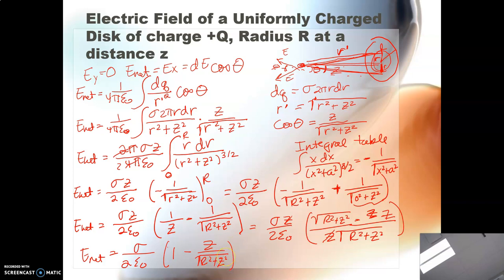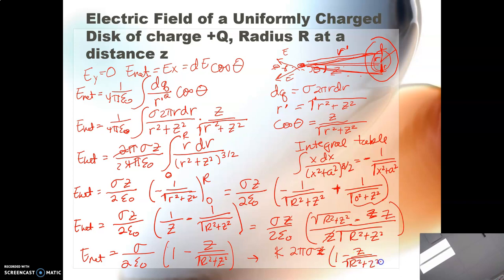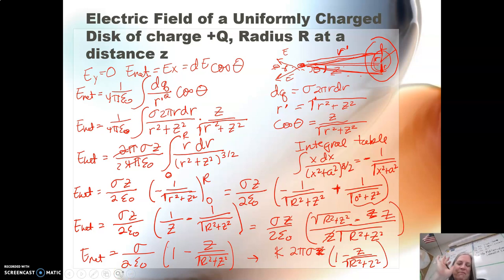Now, obviously it would look different if we had used k — we wouldn't have been able to cancel that 2π that was on the top. If we used k, this would look like k times 2π sigma, and then you'd still have 1 minus z over the square root of R squared plus z squared. So in this case it actually looks better using 1 over 4πε₀ because sometimes that happens. All right, now I'm done. If you are still here — bye.